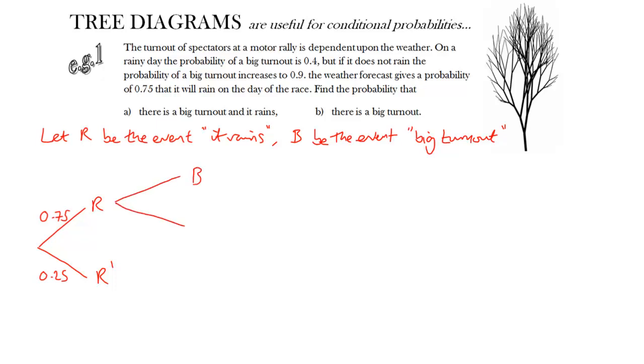In either case, the next split is between either a big turnout or not a big turnout. And we're given the probabilities we need here as conditional probabilities. So if it rains, we're told that the probability of a big turnout is only 0.4, and therefore not a big turnout has a probability of 0.6. Whereas if it doesn't rain, the probability of a big turnout increases to 0.9, and the probability that there isn't a big turnout obviously decreases to 0.1.